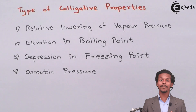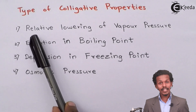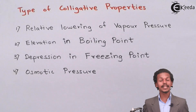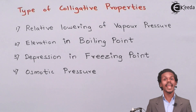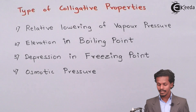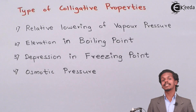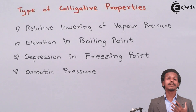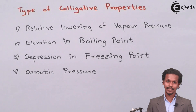So these are a few types of colligative properties. The first one is relative lowering of vapor pressure — we can reduce the vapor pressure of a liquid by adding a few solute particles in the solution. The second is elevation in boiling point — we can increase the boiling point of a solution by adding a few solute particles.